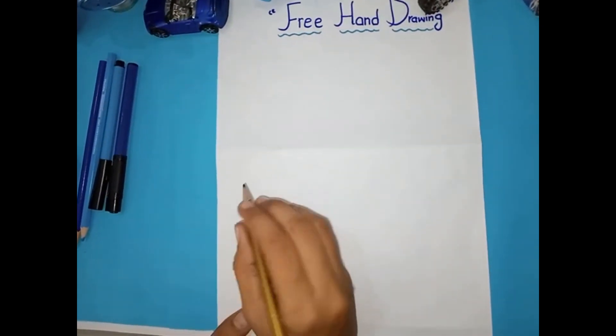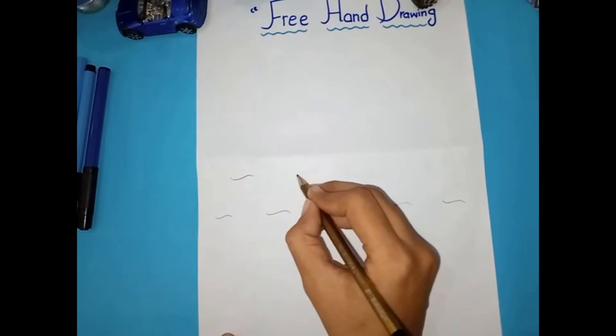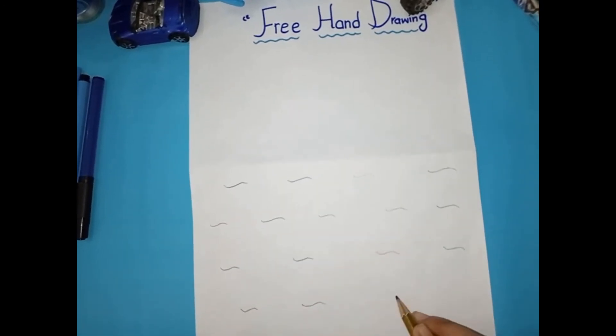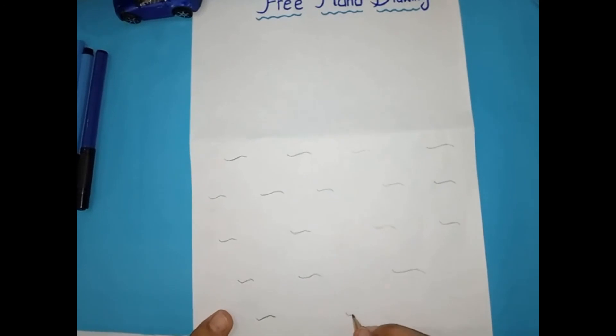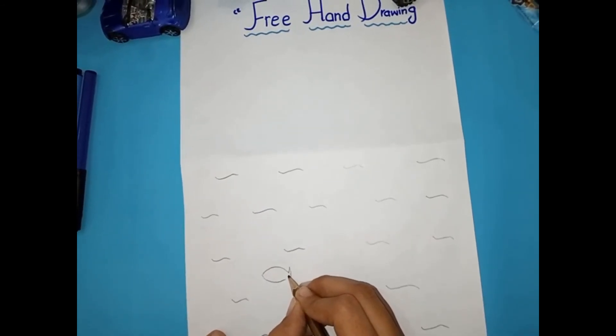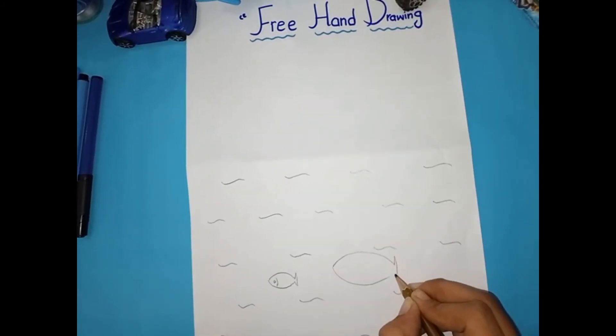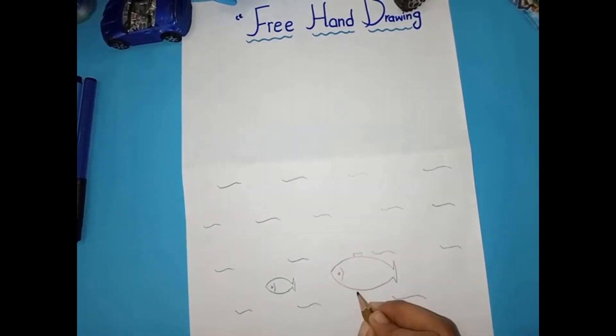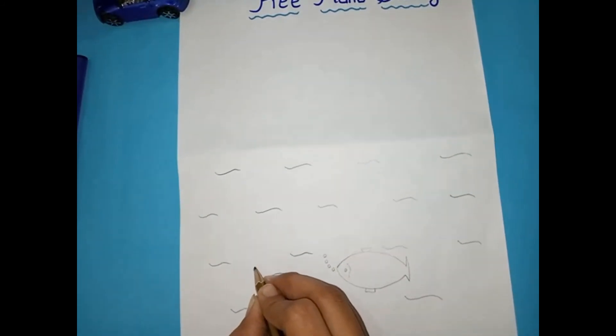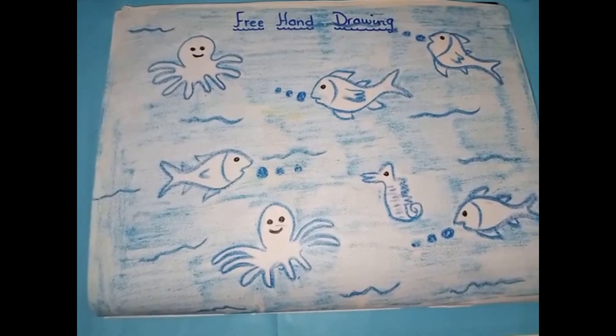First of all you have to do water, this way. After making water we will make some fish. You know in sea there are fish big and small so we will make some fish.